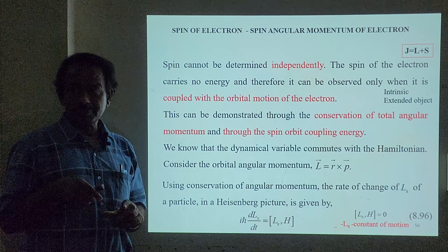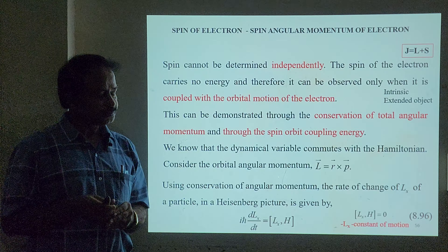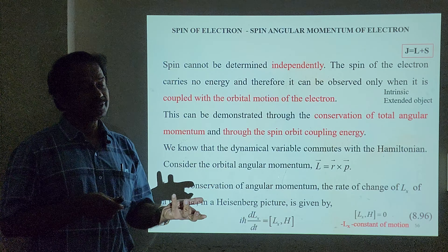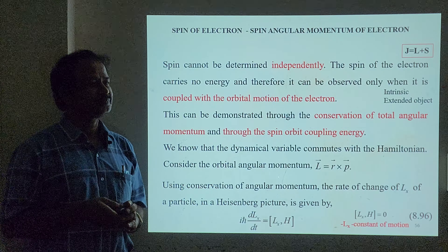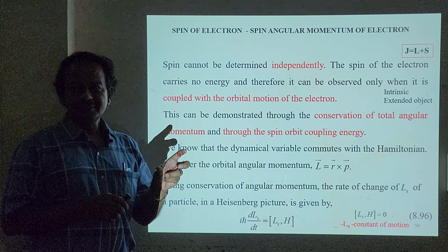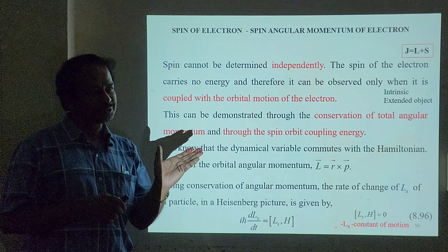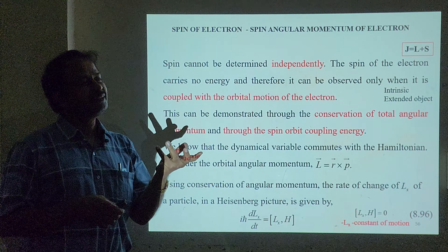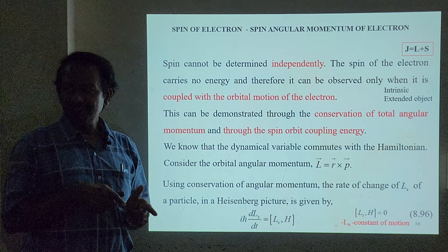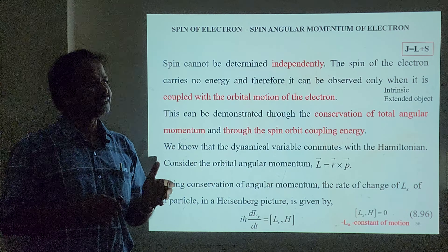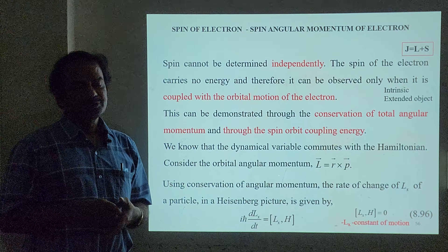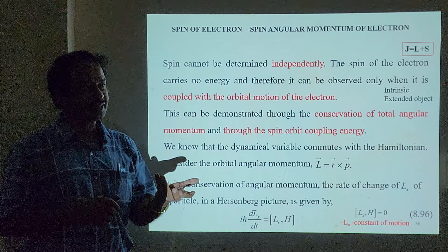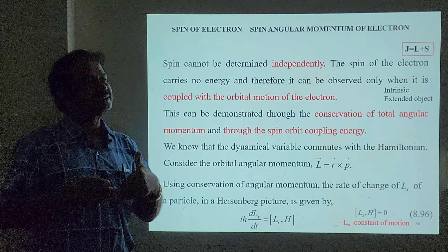This ℏ/2 concept will also be brought out by Dirac using relativistic quantum mechanics, as we are going to see. The spin of the electron is an intrinsic, built-in, inherent property. Actually, the electron is not a particle — it is associated with a wave and is an extended object. For waves, we cannot say which direction it spins; so the spin concept is an intrinsic property of the electron.